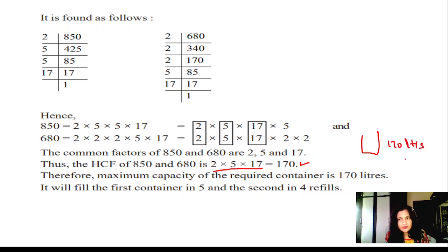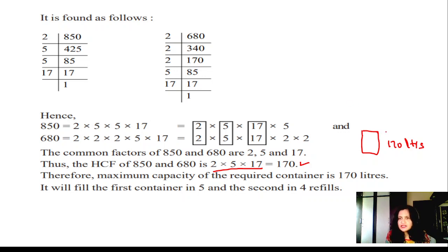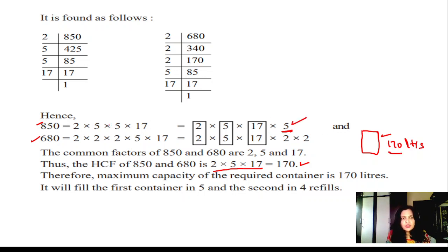This small container has a capacity of 170 liters. Fill this container and pour it into the bigger tank. How many times do we have to fill it? For the 850-liter container: 850 ÷ 170 = 5 times. For the 680-liter container: 680 ÷ 170 = 4 times. So the answer is a 170-liter small container capacity.